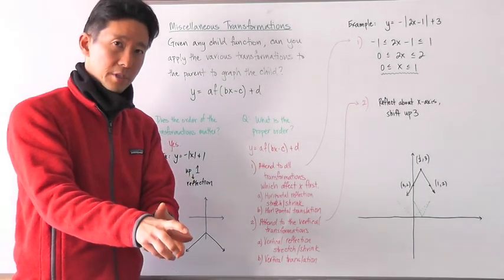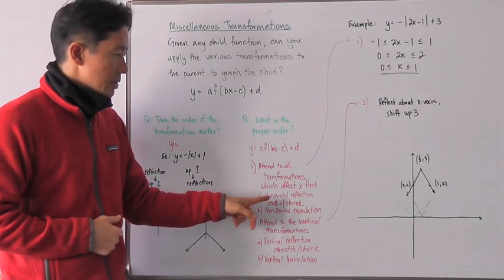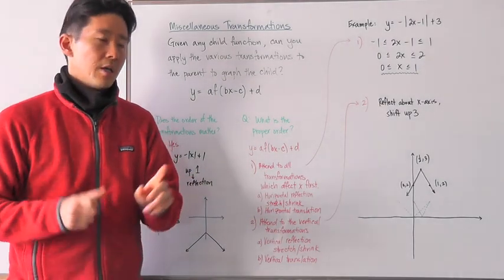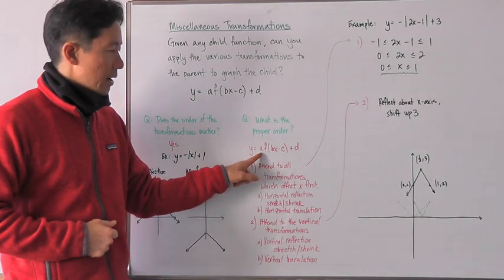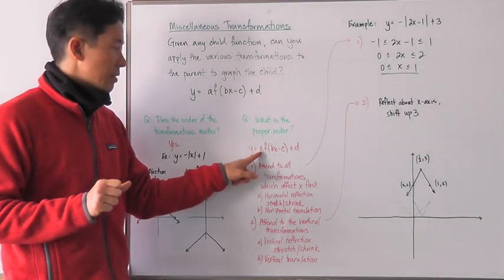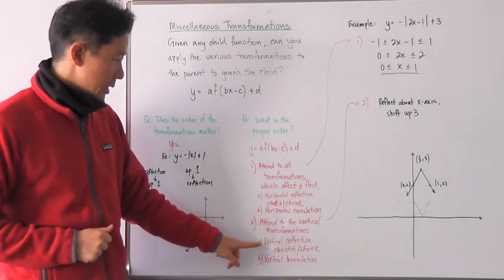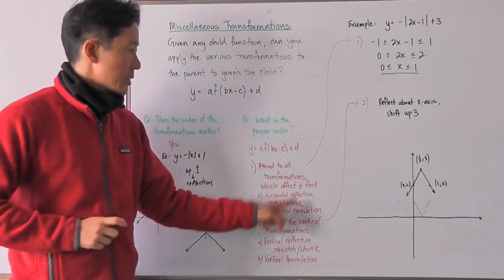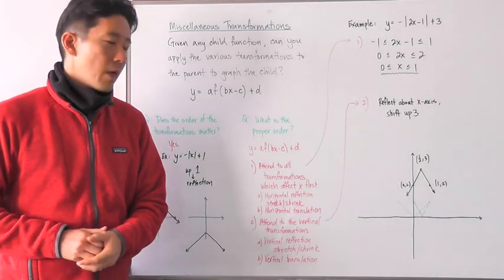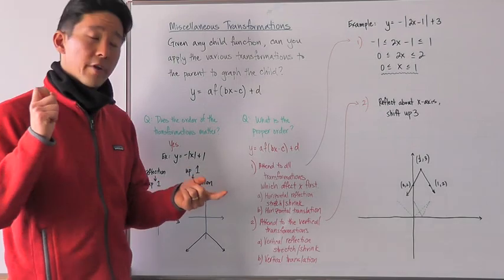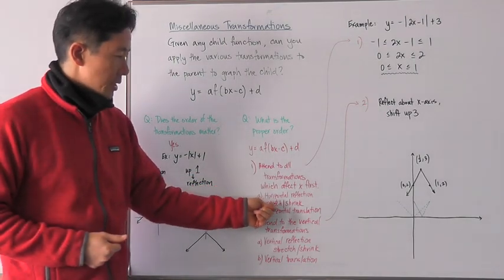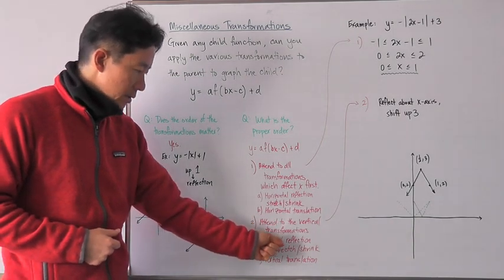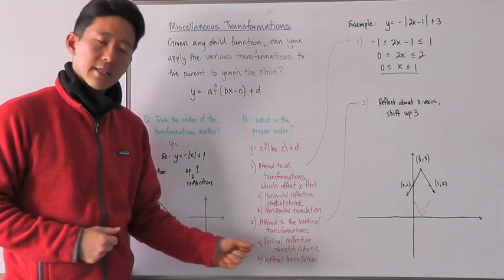So if we consider that, what has to happen first is we take a look at all of the transformations which affect x first, because those are the things we did first when we substituted the value of x into the child function — we multiplied by b and then subtracted c. So we need to account for all the horizontal reflections, stretches and shrinks, as well as the horizontal translations first. Then we take a look at how that parent function value is multiplied by a, which is the vertical reflection, stretch or shrink. And then lastly, we vertically translate with the value d. So again: attend to all transformations affecting x first, with reflection, stretch and shrink before horizontal translation, then vertical reflection, stretch and shrinks, and lastly, vertical translations.